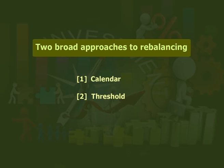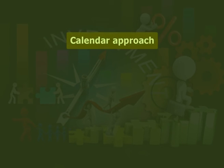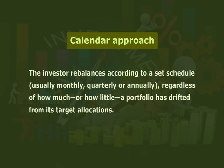There are two broad approaches to rebalancing: number one, calendar, and number two, threshold. In the calendar approach, the investor rebalances according to a set schedule — half a month, monthly, quarterly, or annually — regardless of how much or how little a portfolio has drifted from its target allocations. On the plus side, rebalancing on a schedule takes the emotion out of investing decisions. But if allocations have changed only slightly, you may incur trading costs and tax reporting hassles without getting a lot of benefits.